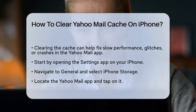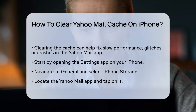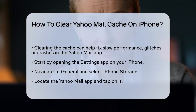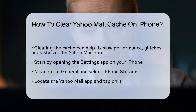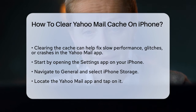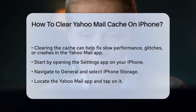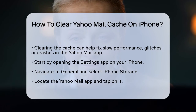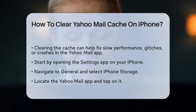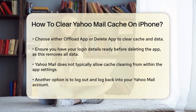To start, you need to clear the data associated with the Yahoo Mail app. Open the Settings app on your iPhone. Go to General, then select iPhone Storage. Find the Yahoo Mail app in the list and tap on it. You'll see the options to Offload app or Delete app. If you choose to delete the app, this will clear all the cache and data associated with it.